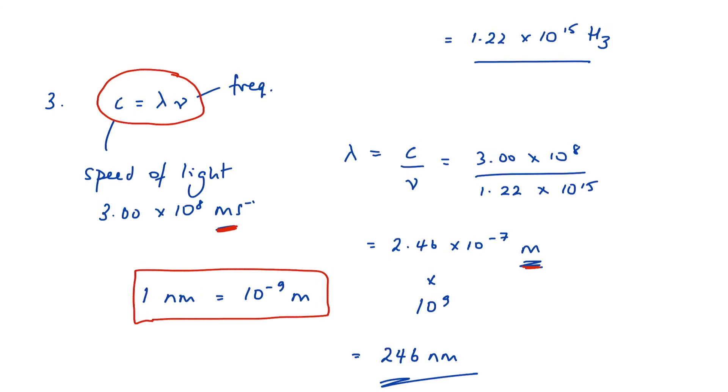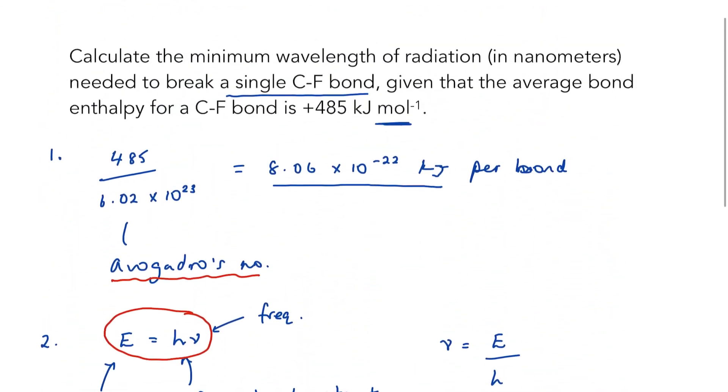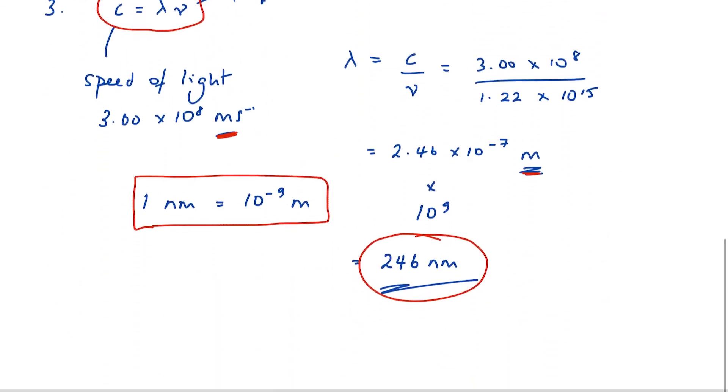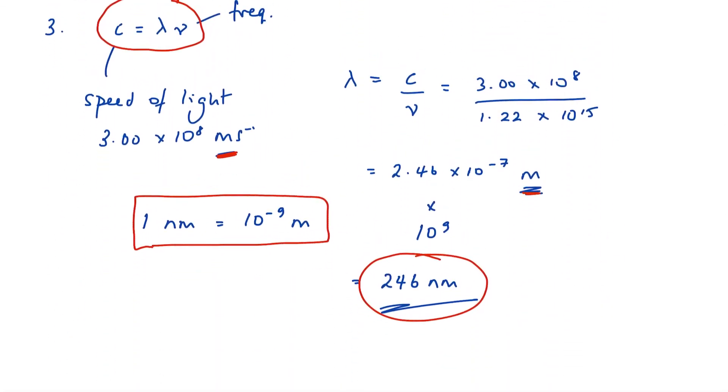And finally, always quote your answer to an appropriate number of significant figures. Well, our original bond enthalpy was given to three significant figures, so my final wavelength is also to three significant figures. Don't expect exam questions to ask you to do that nowadays—they expect you to make that leap all by yourself.